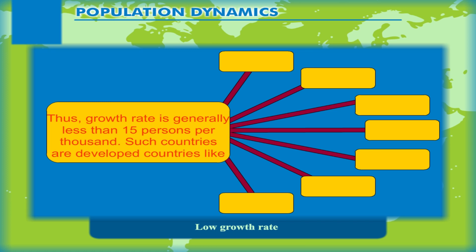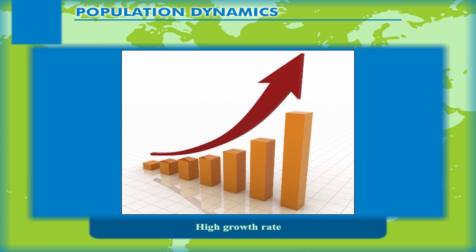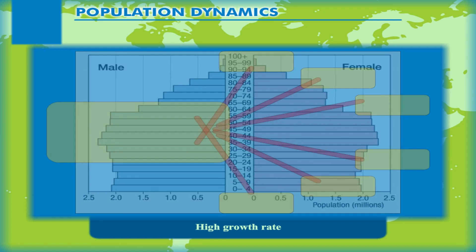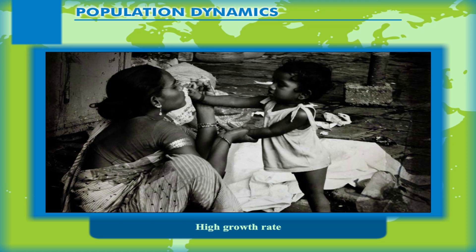Such low growth rate countries include developed nations like USA, Canada, Russia, Sweden, Switzerland, Australia and other European countries. The developing nations in Asia, Africa and South America have high birth rate and low death rate. Their annual growth is almost double that of the developed countries, with a growth rate of about 30 persons per thousand. Countries like Egypt, Ethiopia, Kenya, Algeria, Brazil and Mexico belong to this category. In these countries, due to large-scale illiteracy and poverty, most programs of population control have become meaningless.